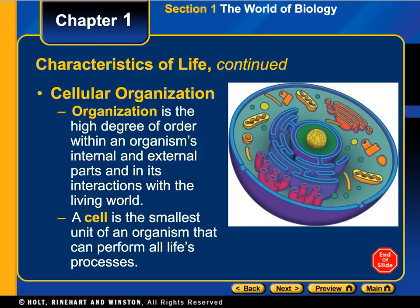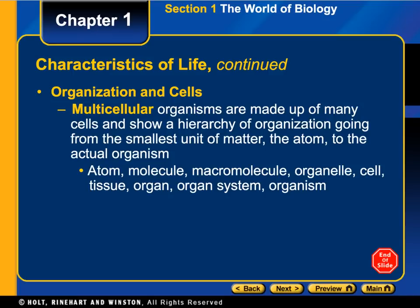The first property is cellular organization. What that means is that all living things have cells — they are organized both internally and externally that way. A cell is the smallest unit of an organism that can perform all of life's processes. Living things can be unicellular, meaning they only have one cell, or multicellular.